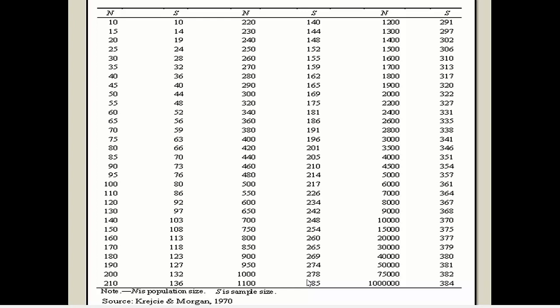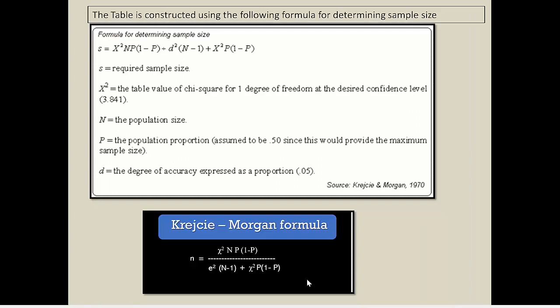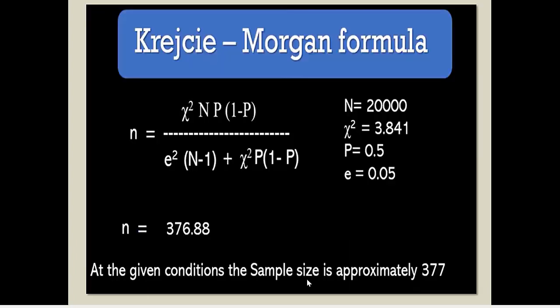Many students ask how this table was designed. Krejcie and Morgan designed this table using a specific formula — this slide is for your reference. I am not expecting you to do any calculation. On this slide I have mentioned the formula along with one example: capital N equals 20,000, chi-square is 3.84, P is 0.5, and e is equal to 0.05. If you put all these figures into the formula to calculate the sample size (small n), your answer is 376.